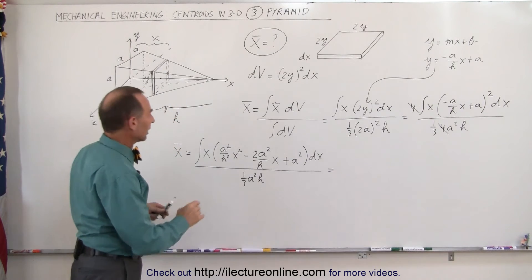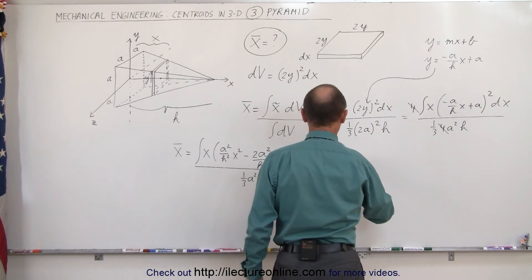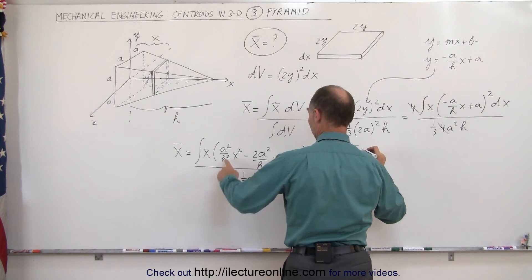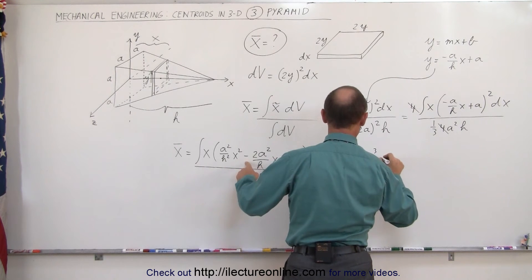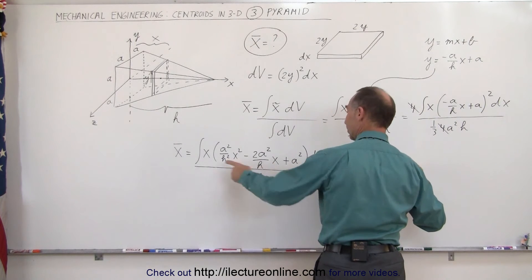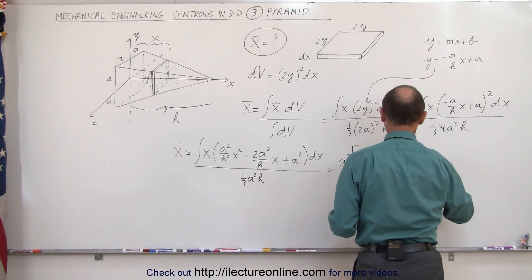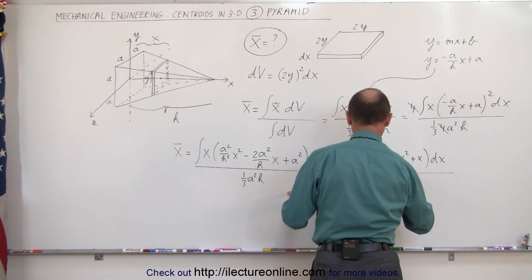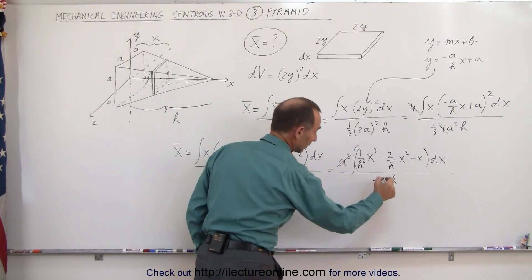We can notice here that every term in the numerator has an a squared, so we can take out the a squared. We get a squared times three integrals: 1 over h squared times x cubed minus 2 over h times x squared, plus x times dx, the whole thing divided by one-third a squared times h. Notice we have an a squared here and an a squared there, that cancels.